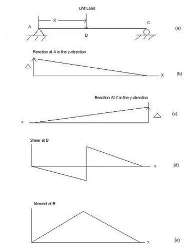Part D of the figure shows the influence line for shear at point B. Using the beam sign convention and cutting the beam at B, we can deduce the figure shown.